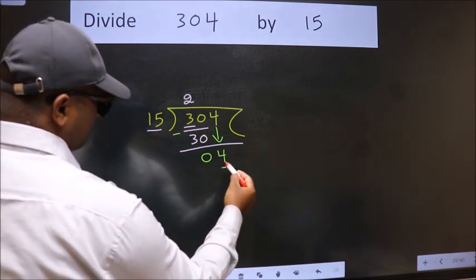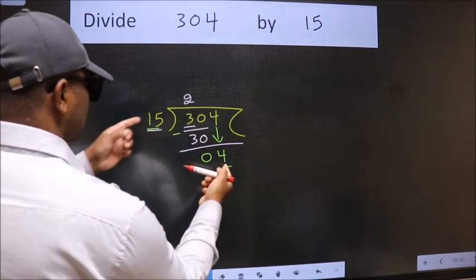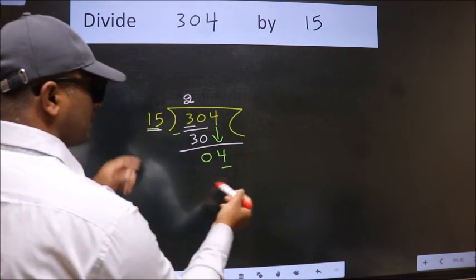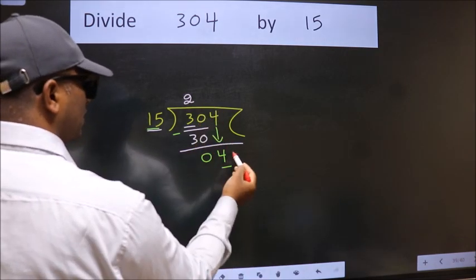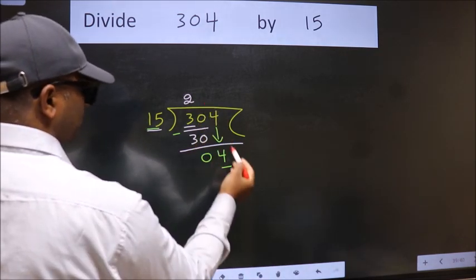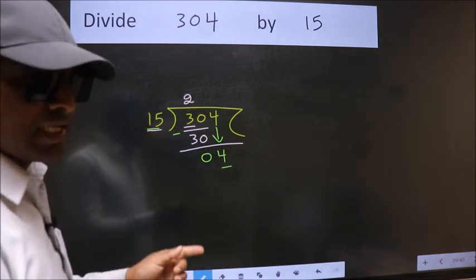Here we have 4. Here 15. 4 is smaller than 15. So what many do is they directly put a dot and take 0, which is wrong.